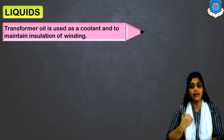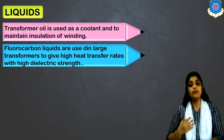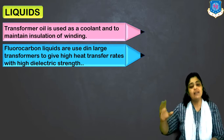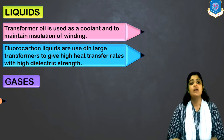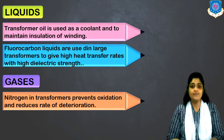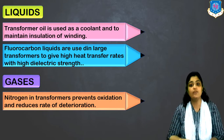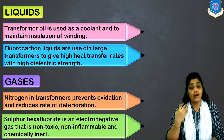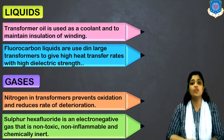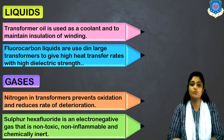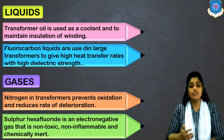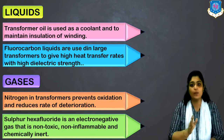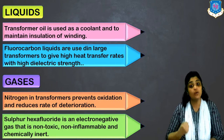For liquid dielectrics in transformers: transformer oil is used both as a coolant and as an insulating material, and falls under the category of mineral insulating oils naturally available from crude petroleum. Fluorocarbon liquid is used in transformers to give high heat transfer rates and good dielectric strength. For gaseous dielectrics: nitrogen is used because it is chemically inert, preventing oxidation. Sulfur hexafluoride (SF₆) is a highly chemically inert, non-toxic, and non-inflammable gas used in high voltage transformers to prevent hazards.